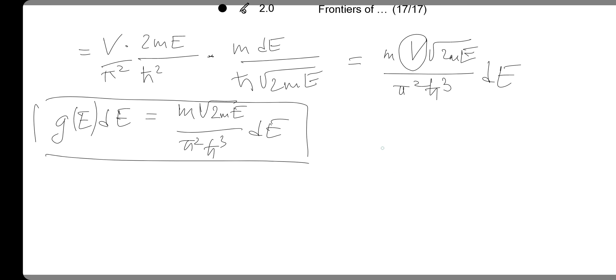Quite a nice result. So if we plot the energy here and here is the density of states, you will have something like a square root dependence. Density of states grows with energy in 3D.